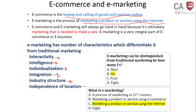E-marketing can be distinguished from traditional marketing by 6 'I's: Interactivity, Intelligence, Individualization, Integration, Industry structure, and Independence of location. What is e-marketing? Marketing of a product or service using the internet.